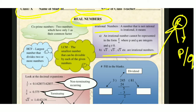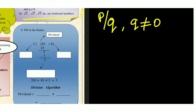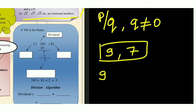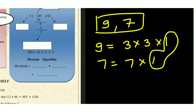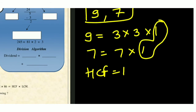The next concept is co-prime numbers. Two numbers which have only 1 as their common factor are called co-prime numbers. For example, take 9 and 7. The factors of 9 are 3×3 and 1; the factors of 7 are 7×1. The only common factor is 1, so HCF is 1, meaning these are co-prime numbers.